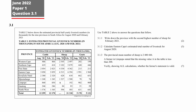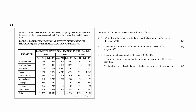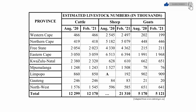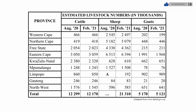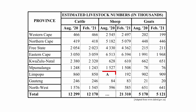Question 3.1 consists of three data handling questions designed to assess your understanding of data handling in relation to interpretation and analysis of data in a table. You are given a table of the estimated provincial livestock numbers in South Africa for a half year. The values shown in the table are in thousands, and there is a missing value A in the table which you will have to calculate.